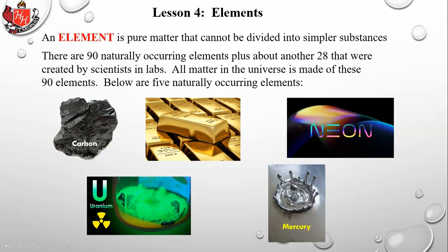Mercury is the only metal that's actually a liquid at room temperature. You can take a steel ball and put it on liquid mercury and it will float, because mercury is more dense than steel.